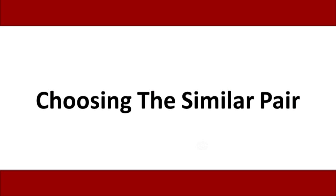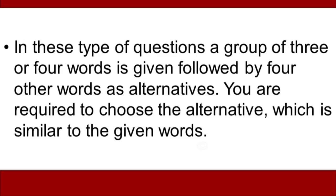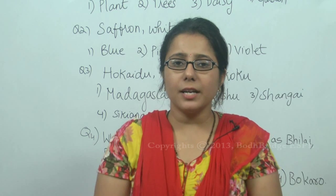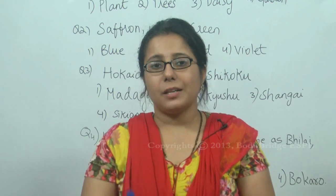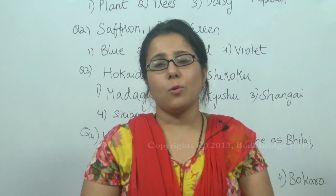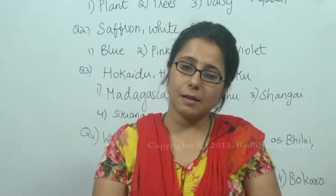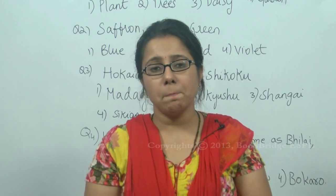Type 5: Choosing the Similar Pair. In these types of questions, a group of three or four words is given, followed by four alternatives. You are required to choose the alternative which is similar to the given words. We had done a similar kind of question before, but a few of these were asked in the exam, so we are covering this type as well.